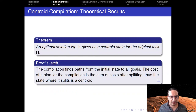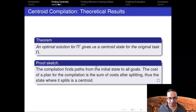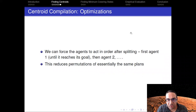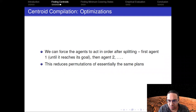It's fairly easy to see that an optimal solution for this compilation gives us a centroid state for the original task. The proof is that the compilation encodes paths from the initial state to all the goals, and the cost of these paths is the sum of costs of the actions after splitting — so the optimal solution is a centroid. There's also a slight optimization to reduce some partial orders: force agents to act in order after splitting. Instead of allowing each agent to act freely, we allow agent one to act until it reaches its goal, then agent two, then agent three, etc. This reduces a lot of useless symmetries.